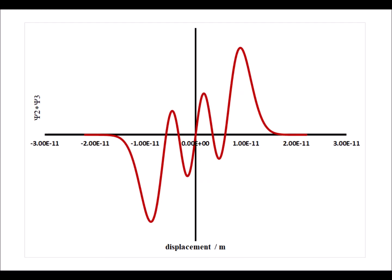And here is our final example of orthogonality. We have psi2 star psi3. We color in the loop regions — the greater-than-0 ones are in dark and the less-than-0 ones are in light. Again, in this case we can see by symmetry that the positive regions and negative regions cancel each other out to give an overall integral of 0, thereby demonstrating that eigenfunctions with different eigenvalues are orthogonal.